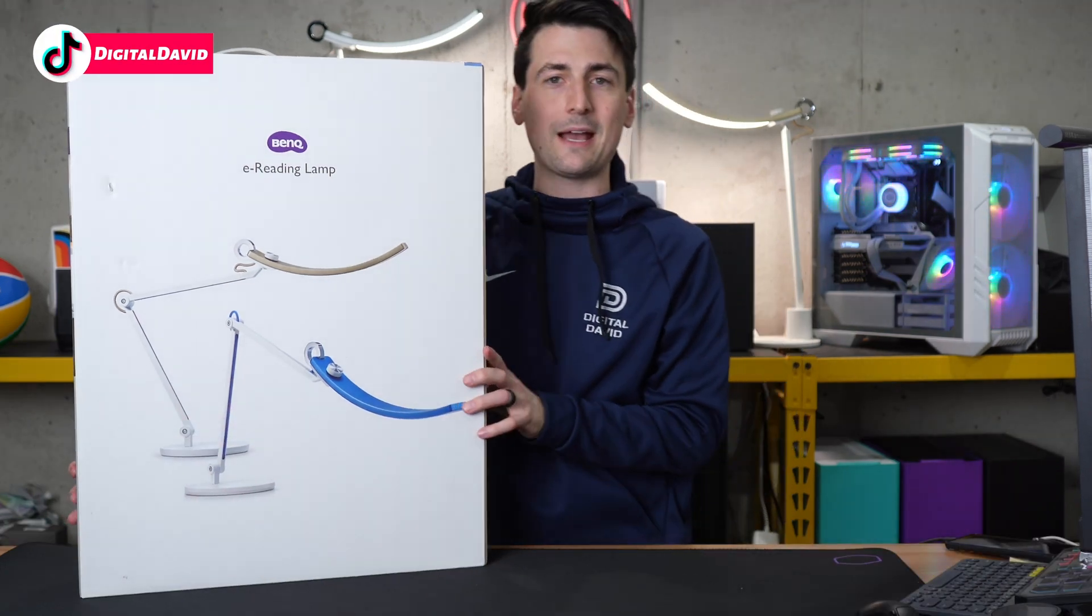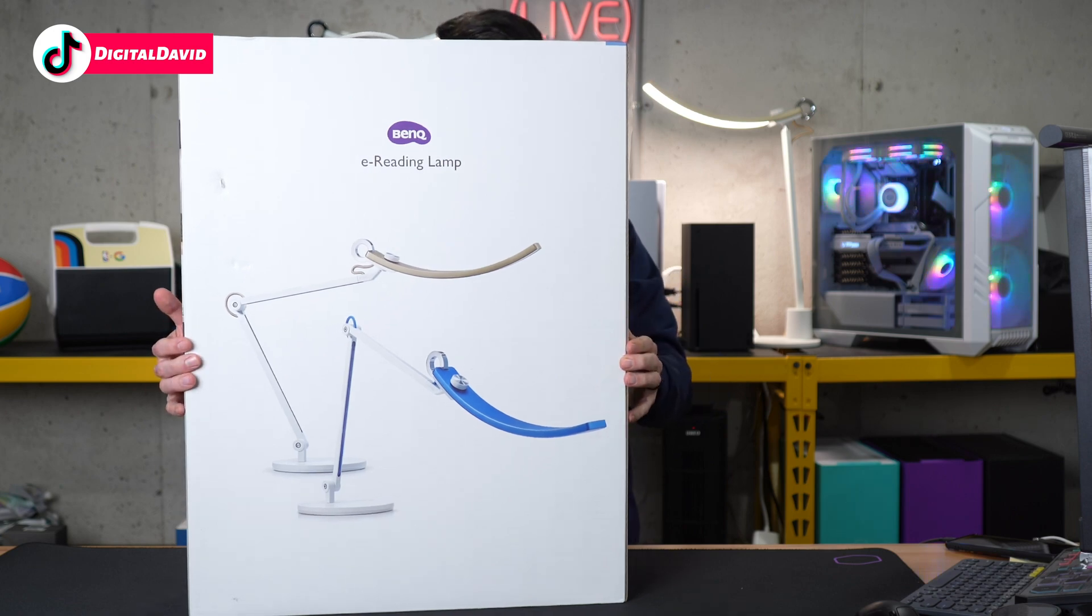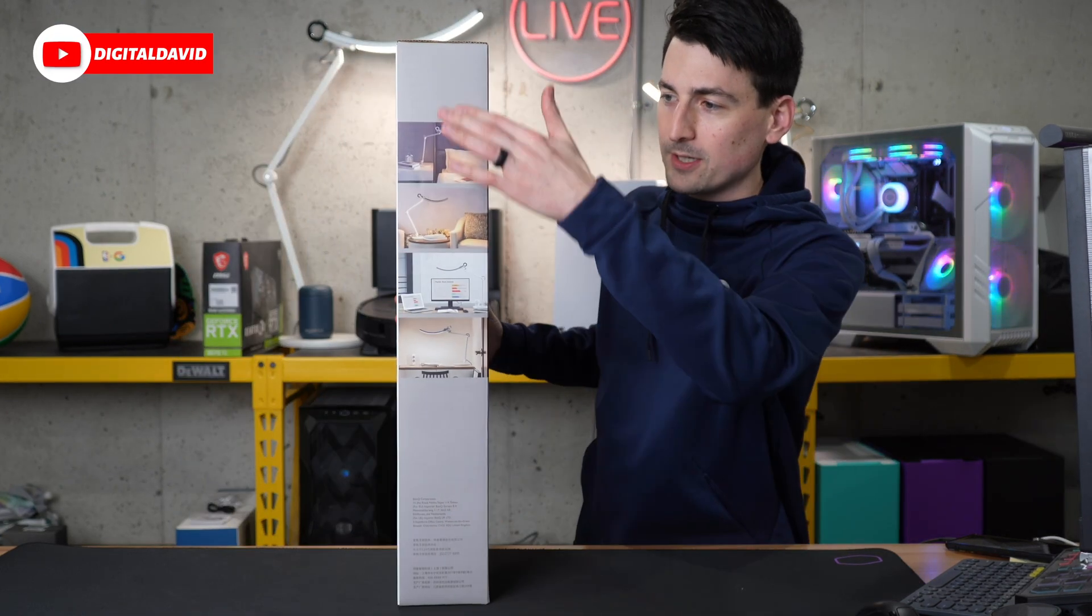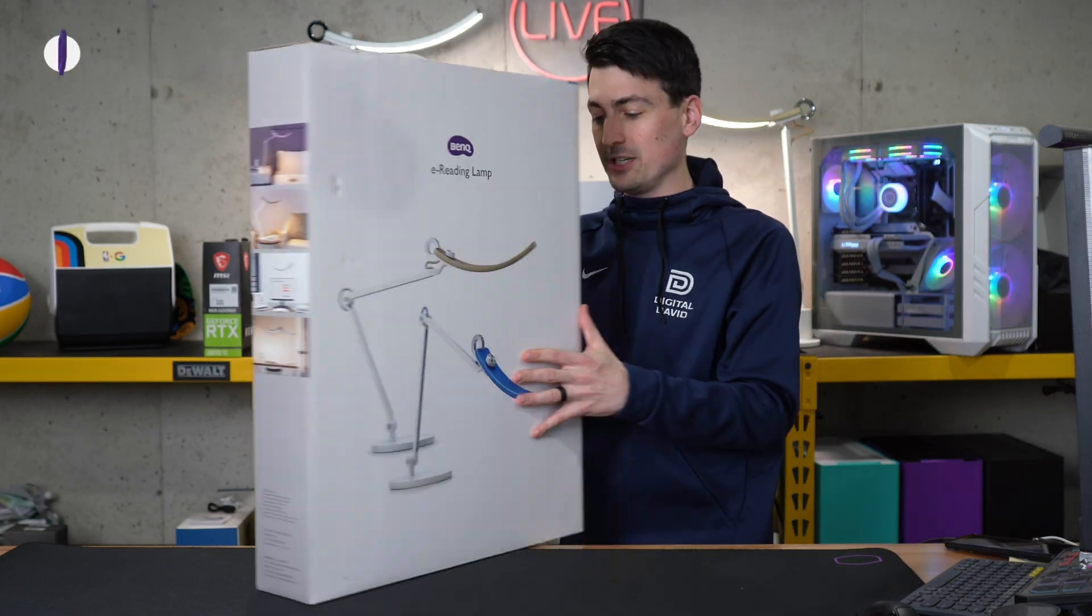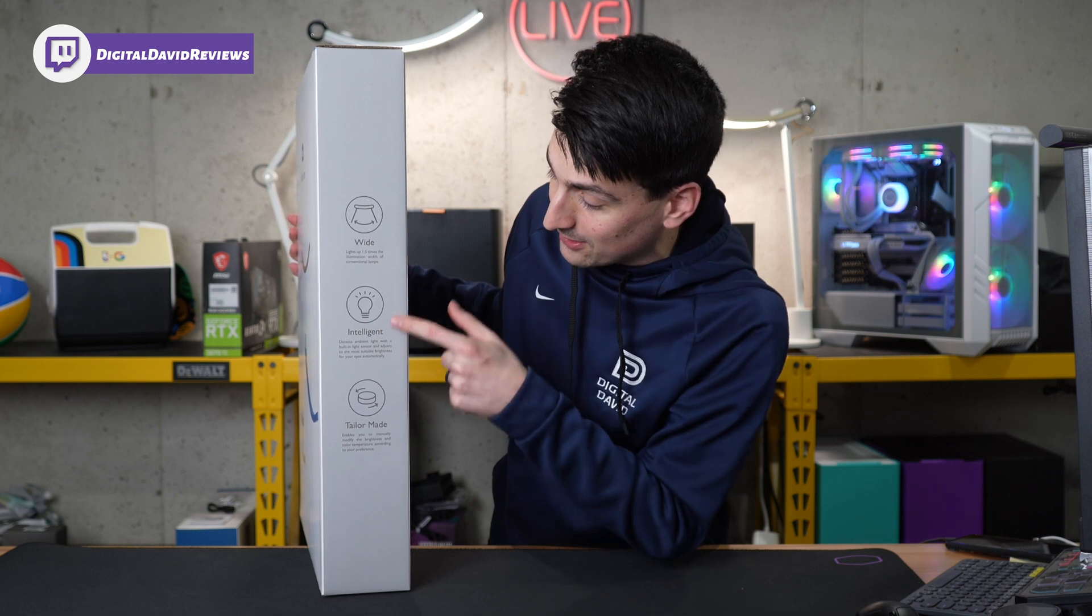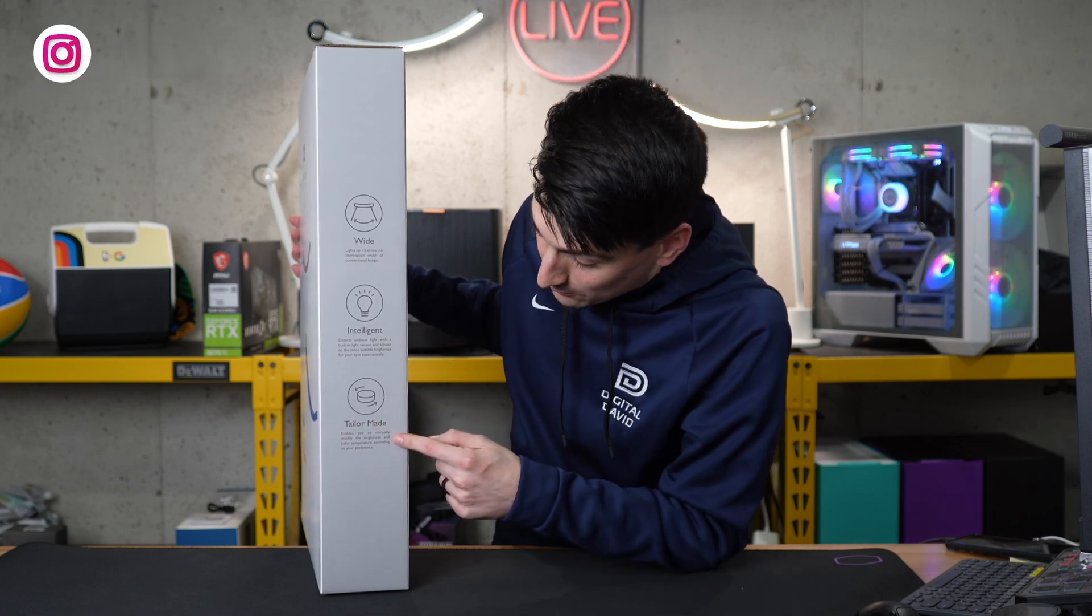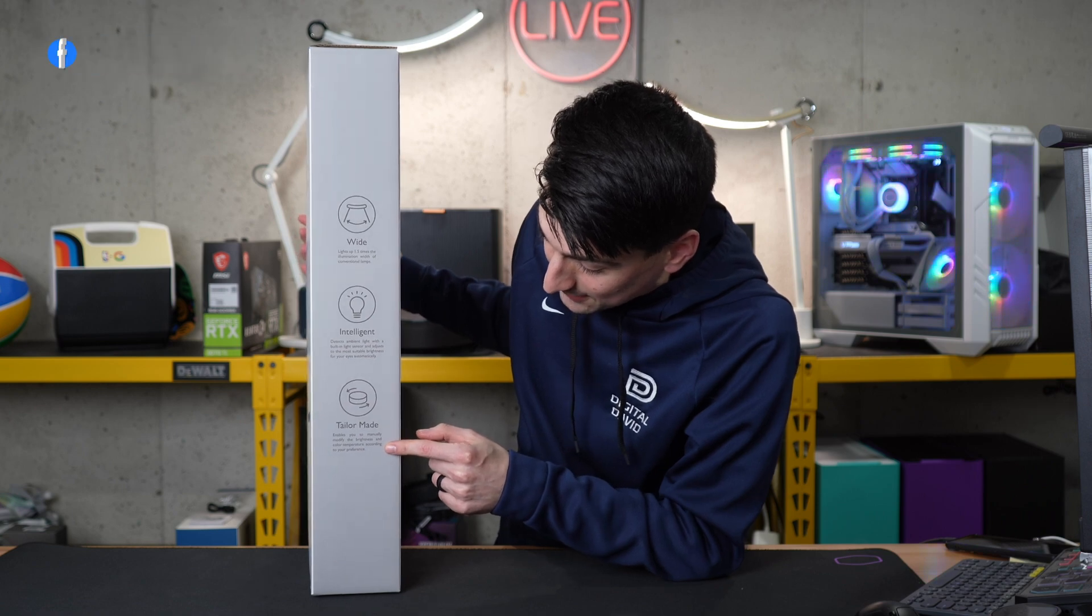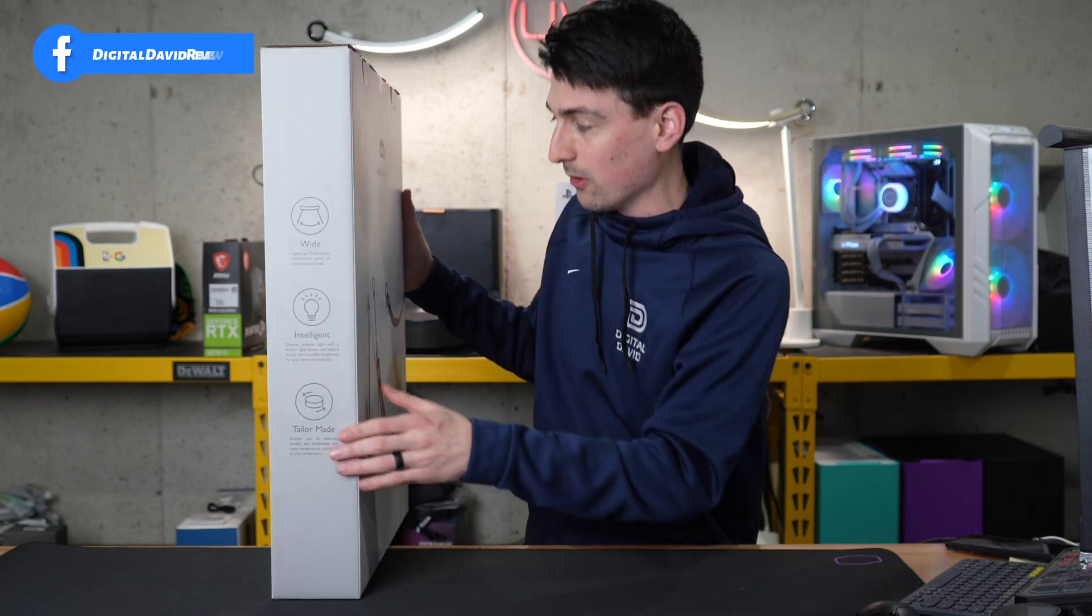So retail box and packaging looks great. It's available in multiple colors. We got gold and blue, silver and pink. Great product imagery on the side to see it in action. And on this side, we have a couple of our key features here. Wide beam angle, intelligent ambient light detector, and we have the ability to customize our controls to modify the brightness and temperature to our own preferences.